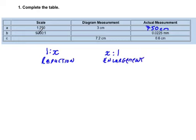An example would be 9500 to 1, where that's an enlargement of an actual object, whereas 1 to x is a reduction of a larger object. So if the diagram measurement is greater than the actual measurement, then that's an enlargement.